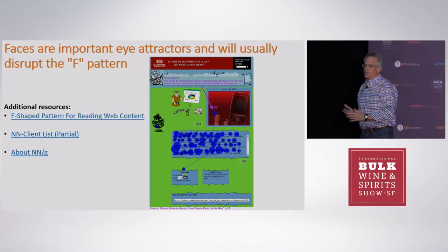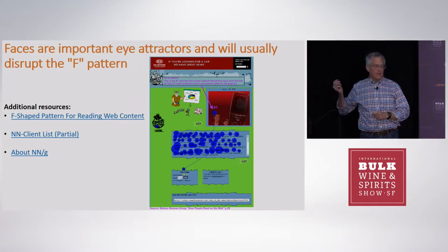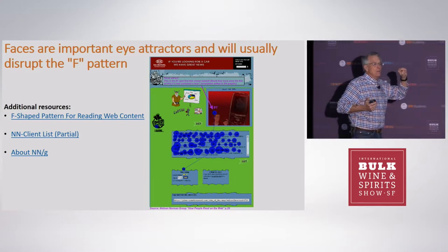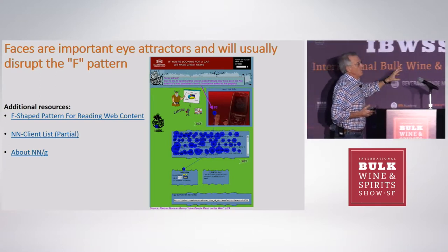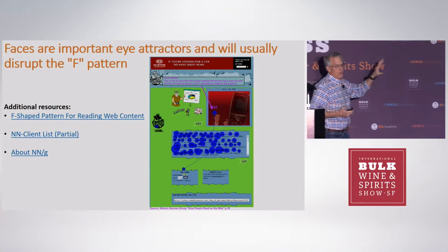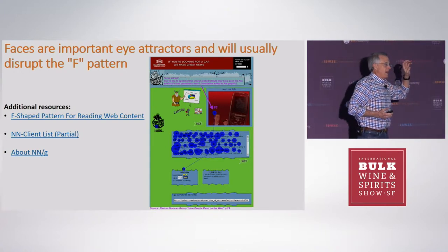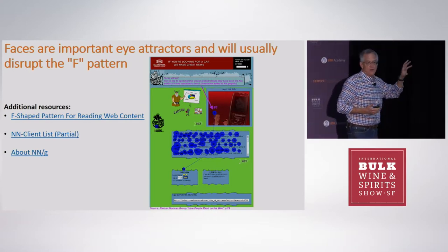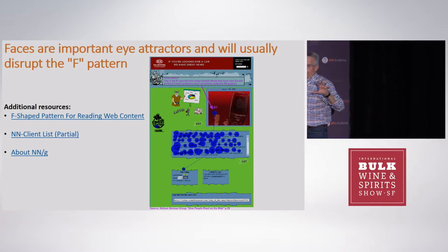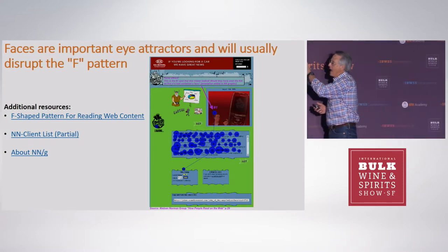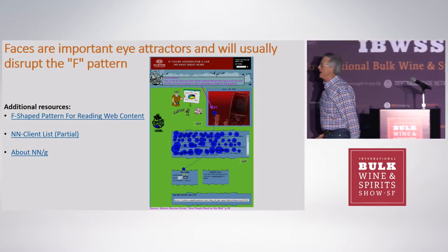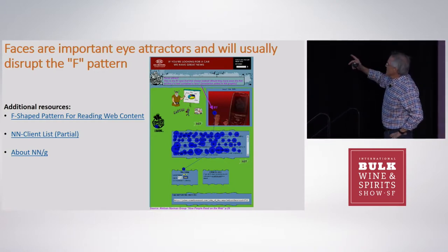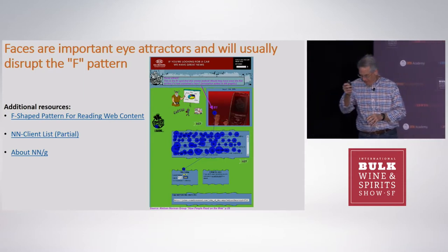That previous example was done by a company called Nielsen Norman — not connected with Nielsen the data people. Nielsen Norman is the world's best acknowledged interface design company. They have some minor clients like Google and Microsoft who use them to figure out how to structure a page.